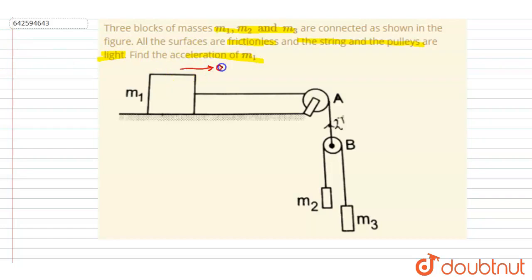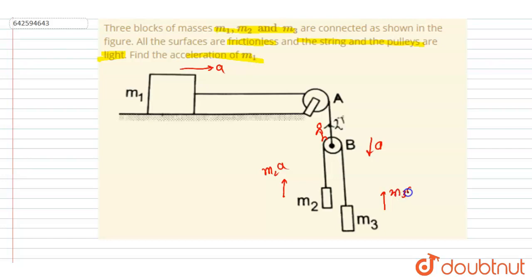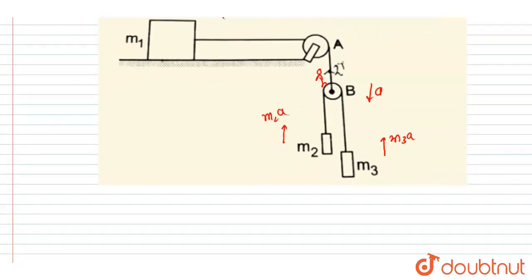This pulley will also have an acceleration 'a' downward. If we solve with respect to the frame of the pulley, these two blocks will be acted upon by a pseudo force of m2*a in the upward direction and m3*a in the upward direction. With respect to the pulley, let's suppose this block has an acceleration of a' in the downward direction and this block has an acceleration of a' in the upward direction.